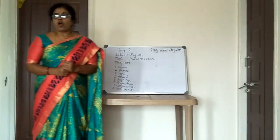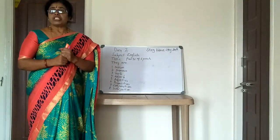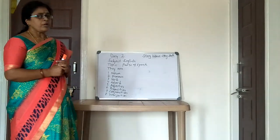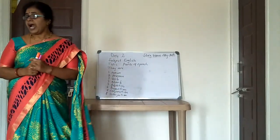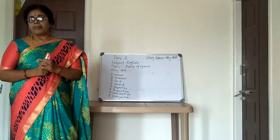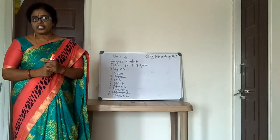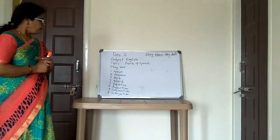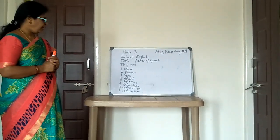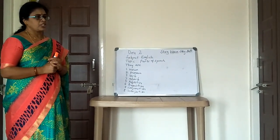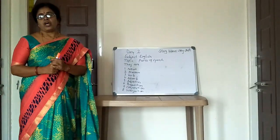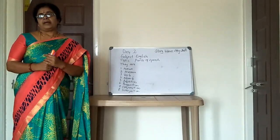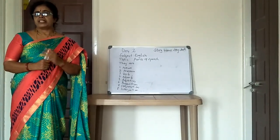Children, repeat along with me. The 8 parts of speech are: noun, pronoun, verb, adverb, adjective, preposition, conjunction, and interjection. Let us now study the definition of each part of speech separately.